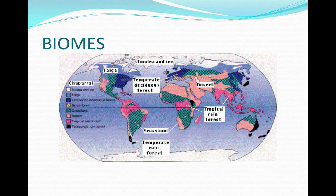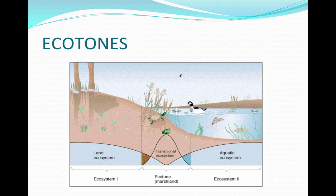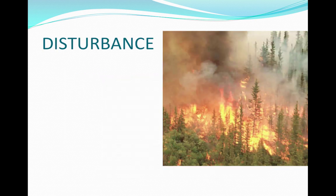Biomes are areas characterized by plants in terrestrial biomes, or by the physical environment in aquatic biomes. Climate changes with latitude, and a climograph shows average temperature and precipitation. Terrestrial biomes often overlap in areas called ecotones. A biome can be disrupted by disturbances such as fires, storms, or humans that alter the ecosystem.